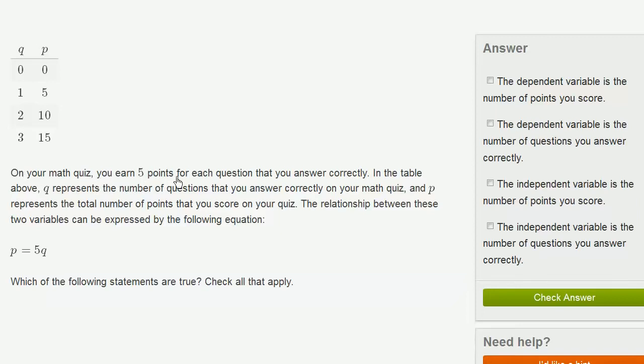On your math quiz, you earn five points for each question that you answer correctly. In the table above, Q represents the number of questions that you answer correctly on your math quiz, and P represents the total number of points that you score on your quiz.